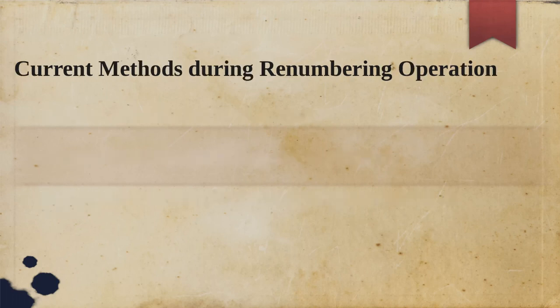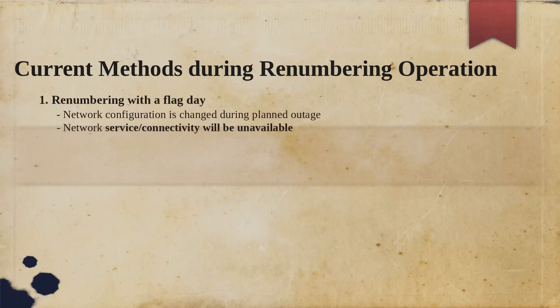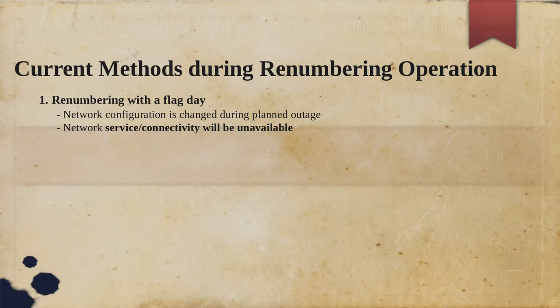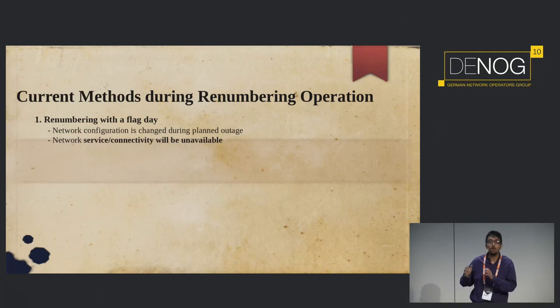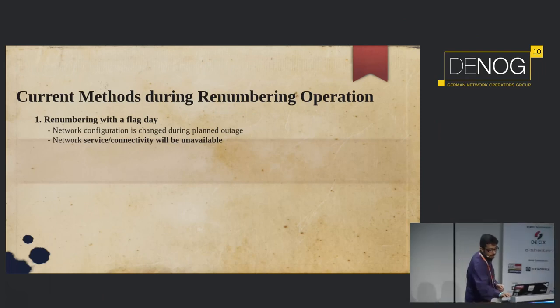Having discussed the motivation for why we need renumbering, let's move on to the existing methodologies available. The most popular one is renumbering with a flag day — a predefined date and time where the operator announces a downtime, shuts down the entire network, assigns new configuration for the entire network, and brings it back up. This is popular, but the main downside is that if your network elements need continuous services, those are blocked, which is not always desired.